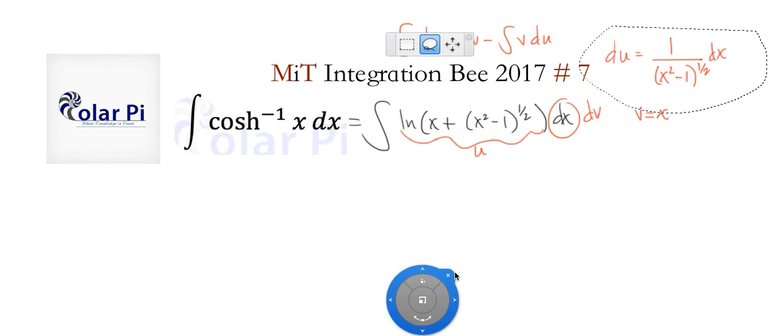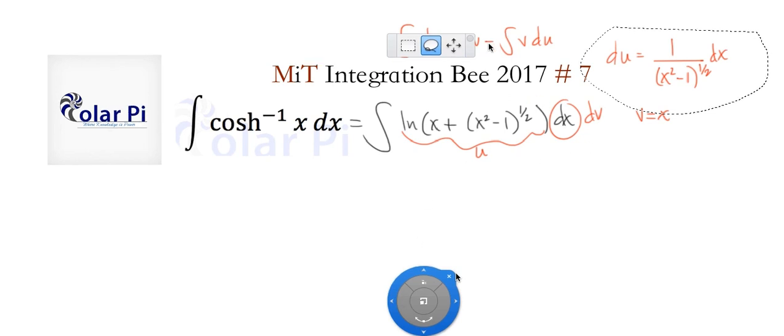So the integral of udv, I know this by heart, you know this by heart, is equal to uv minus integral vdu. We've got all the puzzles to the piece: we've got u and v for the uv, and then minus integral vdu.